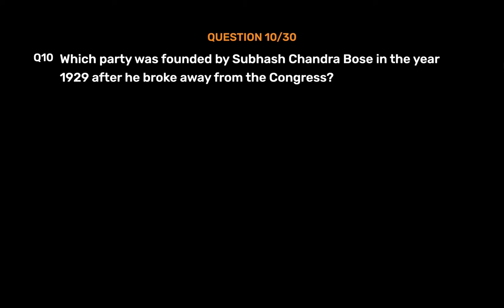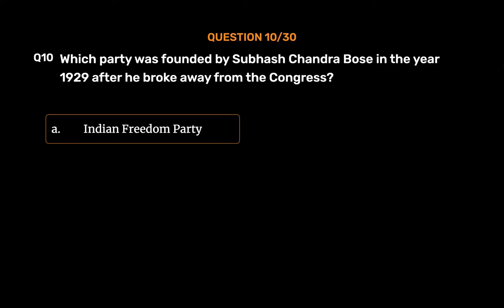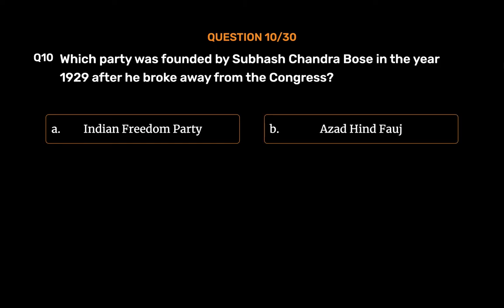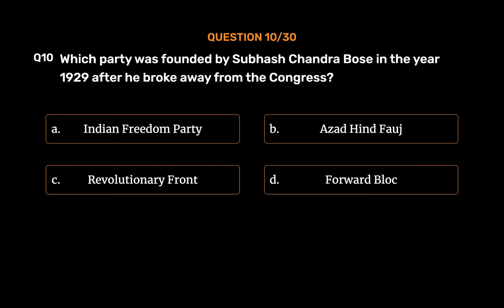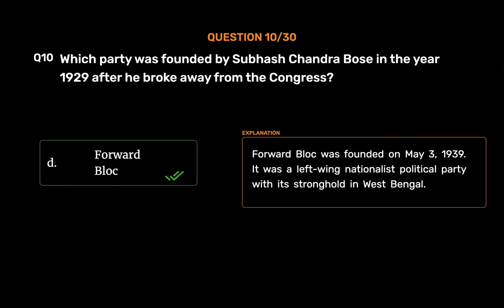Question No. 10. Which party was founded by Subhash Chandra Bose in the year 1939 after he broke away from the Congress? Option A, Indian Freedom Party; Option B, Azad Hind Force; Option C, Revolutionary Front; Option D, Forward Block. The correct answer is Option D, Forward Block. Forward Block was founded on May 3, 1939. It was a left-wing nationalist political party with its stronghold in West Bengal.